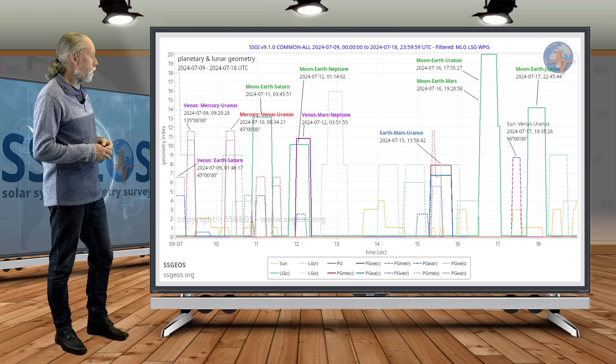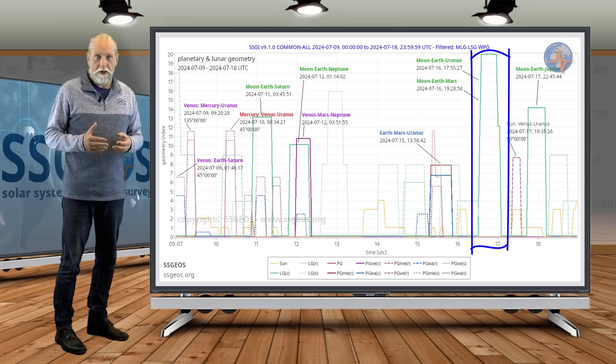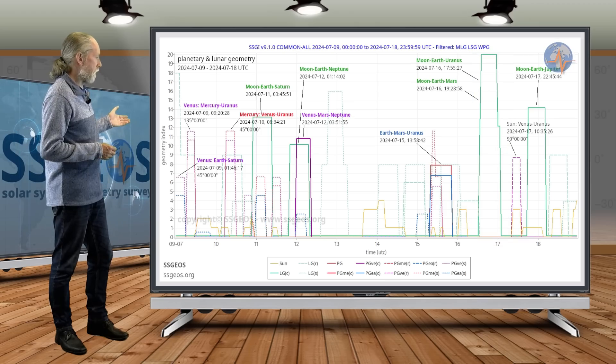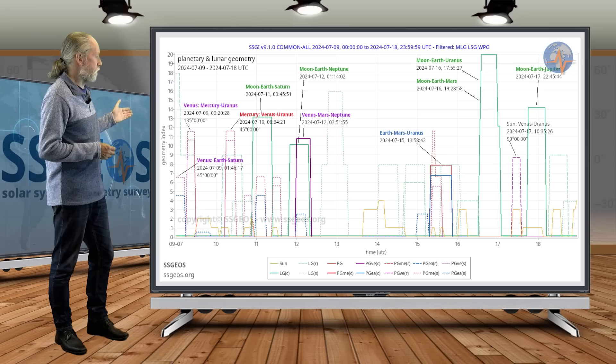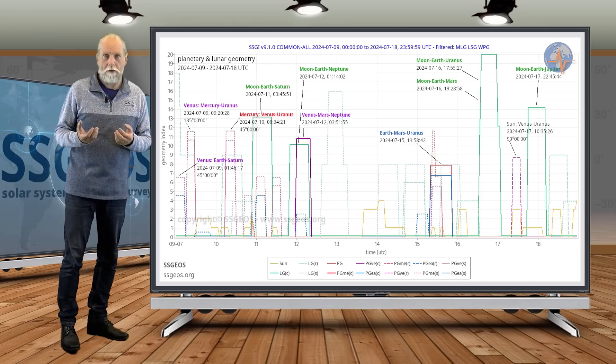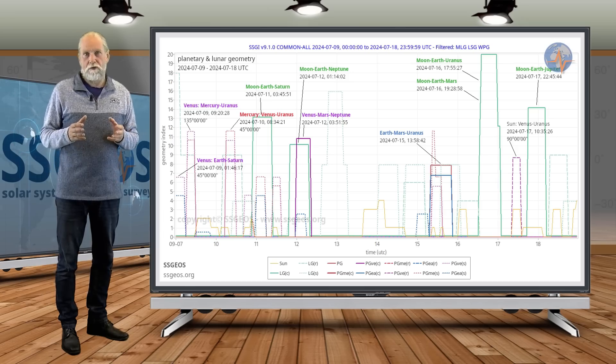And then you see a high lunar peak, that is because the Moon will be in opposition. That's what we call a conjunction in our simplified terms. That's Moon, Earth, Mars and Moon, Earth, Uranus. And there's only one and a half hour in between. So this geometry happens virtually at the same time.